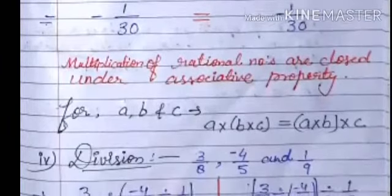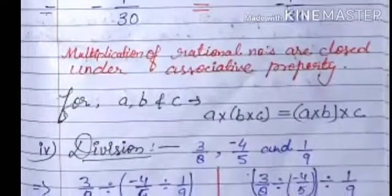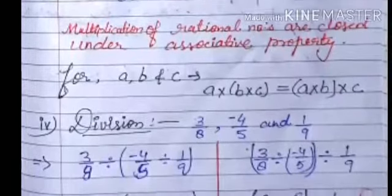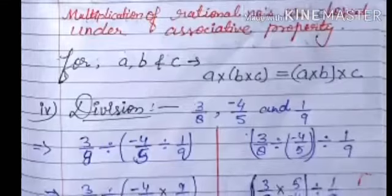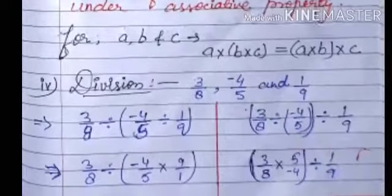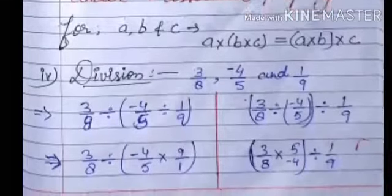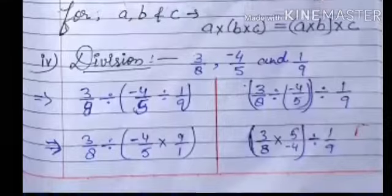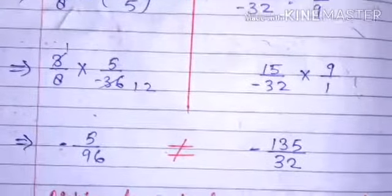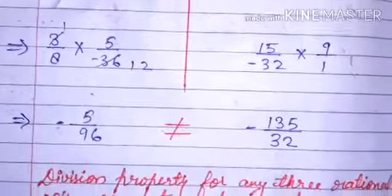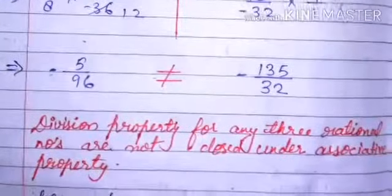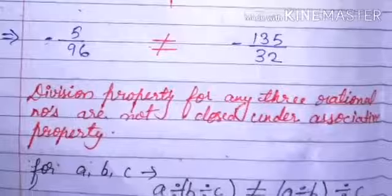Now we will check associative property for division. We have three rational numbers: three upon eight, minus four upon five, and one upon nine. On one side, three upon eight is divided by (minus four upon five divided by one upon nine), and on the other side, (three upon eight divided by minus four upon five) is divided by one upon nine. We get minus five upon ninety six and minus 135 upon 32 respectively, which are not equal. So division for any three rational numbers is not closed under associative property.